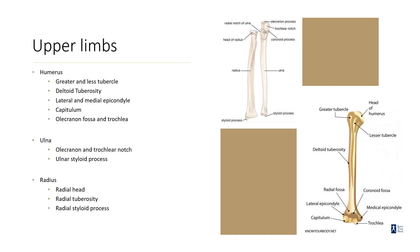Your upper limb bones include your humerus, your ulna, and your radius. Your humerus can be characterized by a greater and lesser tubercle. There's also the deltoid tuberosity, which is just a roughened projection, as well as the tubercle — a tuberosity is just a much larger tubercle. There's also the lateral and medial epicondyle. Condyles are just rounded articular surfaces, and an epicondyle is just a proximal feature to a condyle.